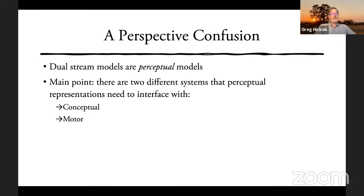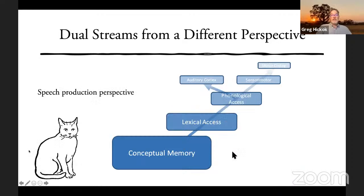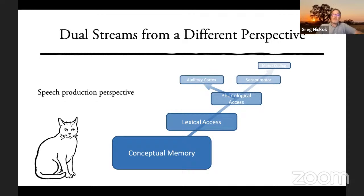Part of this confusion can be diffused if we recognize that there's a confusion about the perspective these models are couched in. Dual stream models are all perceptual models — and when David Poeppel and I developed ours, we were primarily interested in speech perception. The main point is that there are two different systems that perceptual representations need to interface with: conceptual representations and motor representations. But if we reconfigure the same network from the perspective of production — say naming a picture — you access conceptual memory, then lexical information, then phonological code, then motor planning. From that perspective, there is no dual stream at all.